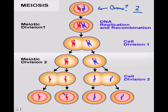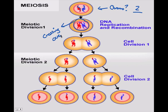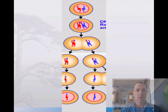Each one of those 4 cells is genetically different. If you look, this cell is all red, this one has a little bit of blue on it, this one has a little bit of red on it, and this one is just blue. The blue and red mixing happened because the two chromosomes laid over each other and did what we call crossing over. Crossing over gives more variation — that's why sexual reproduction produces so much variation.